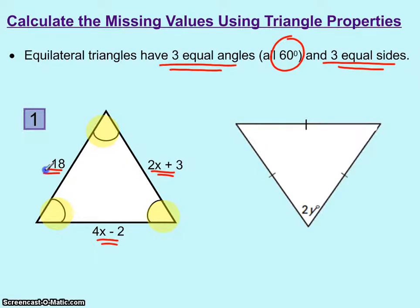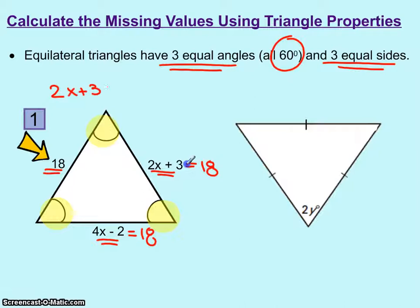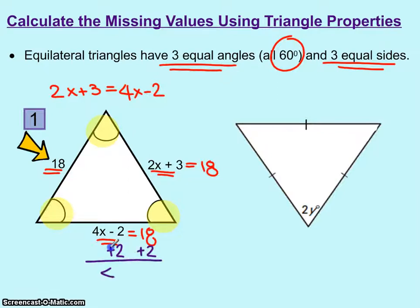You should be able to set up this problem with any two sides equaling each other. My suggestion would be to set one of them equal to 18 and solve the one that seems easiest. If you want, you could set up 2x plus 3 equal to 4x minus 2. All three of those equations will give you the exact same answer. Choosing the bottom one and adding 2 to both sides: 4x equals 20. Dividing by 4, we get x equals 5.